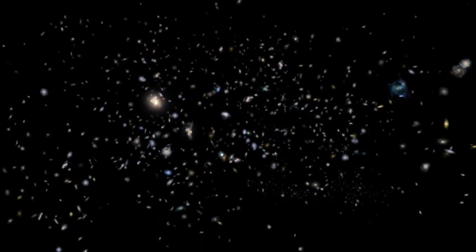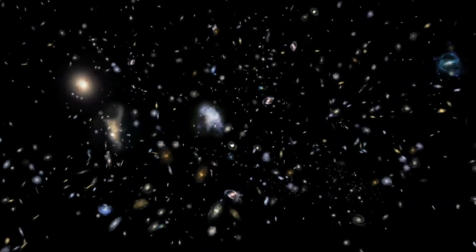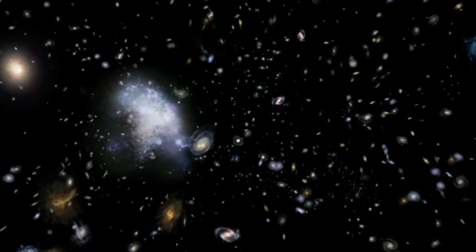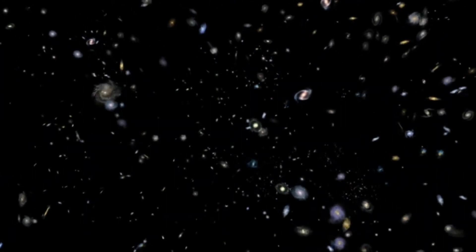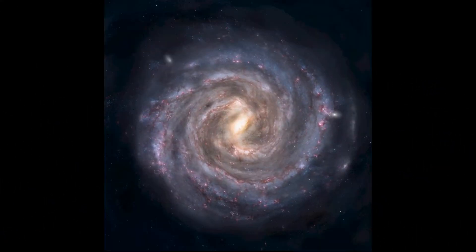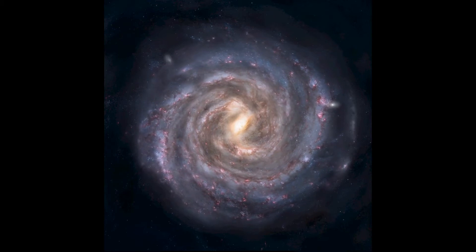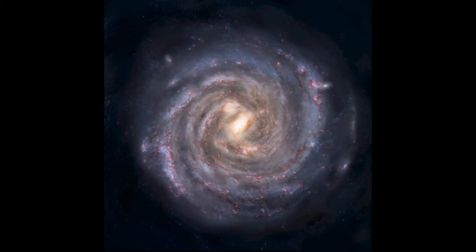As this gas falls toward the black hole, it is heated by strong gravity and friction. Near the black hole, the gas reaches a typical temperature of 10 million degrees. These black hole X-ray sources are easily observed throughout the Milky Way and in nearby galaxies as well, using orbiting X-ray observatories.